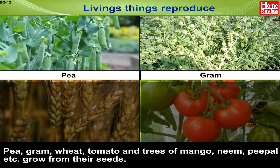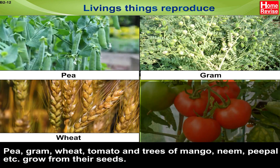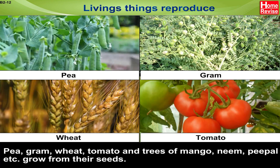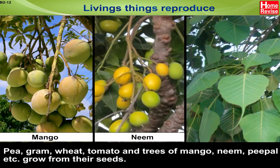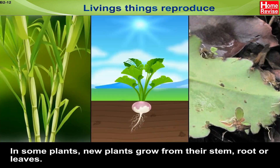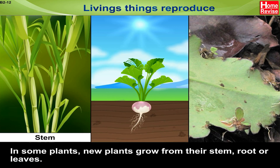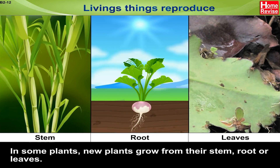Pea, gram, wheat, tomato, and trees of mango, neem, and peepal grow from their seeds. In some plants, new plants grow from their stem, root, or leaves.